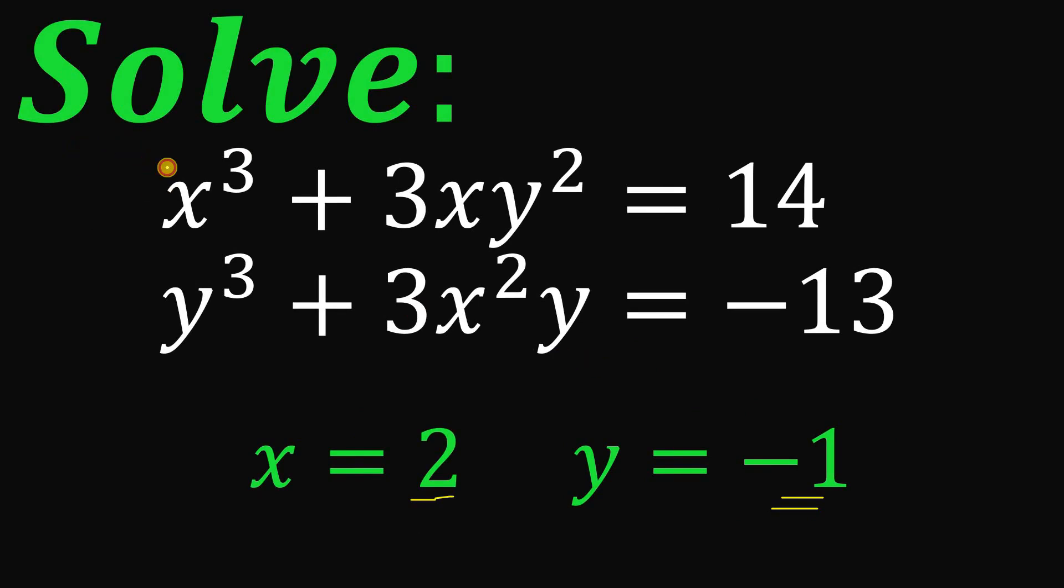So we can check this out. We have 2³ + 3 × 2 × (-1)² = 8 + 6, and 8 + 6 is simply equal to 14.